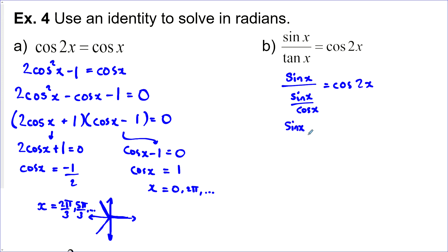So sin x times cos x over sin x. And the sin x and the sin x can cancel and what we're left with is actually the equation from part A.